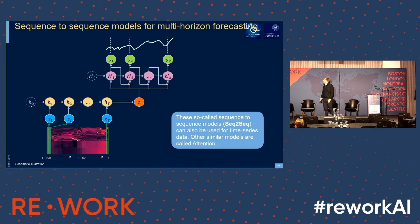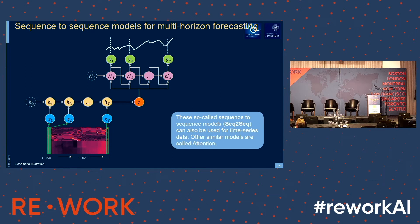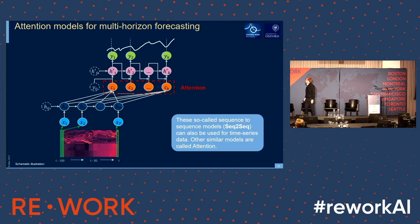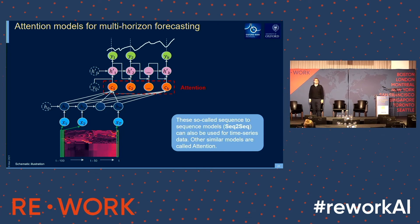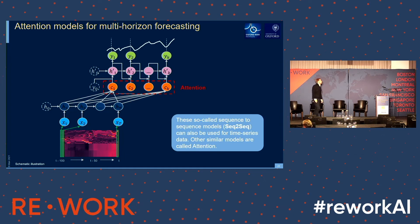Besides sequence-to-sequence, we also look at attention. The problem with sequence-to-sequence is that by feeding information from one memory to the next into the context vector, you start to forget what was in the distant past. That's quite bad, especially if you have periodic structure — if what happened yesterday is not important but what happened a week ago is, that's likely to get lost. This is why we have the attention mechanism, with additional edges called attention weights, where the context vector can attend to any of the memory states in its history and decide to weight something from a week ago more than yesterday.